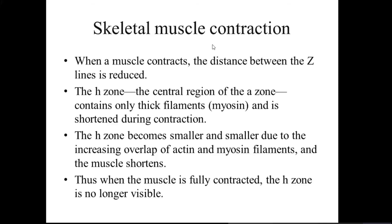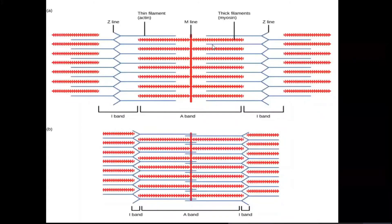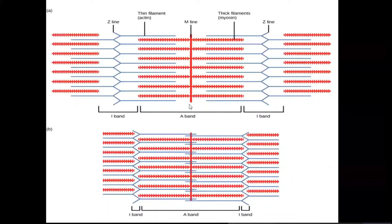When a muscle contracts, the distance between two Z-lines is reduced. Importantly, the individual length of the myofibrils themselves does not get shorter — the myofibrils running in parallel do not shorten. Instead, it is the Z-lines, I-lines, and M-lines that change during contraction. The Z-line gets shorter and shorter until the M-line becomes narrowed and eventually disappears.